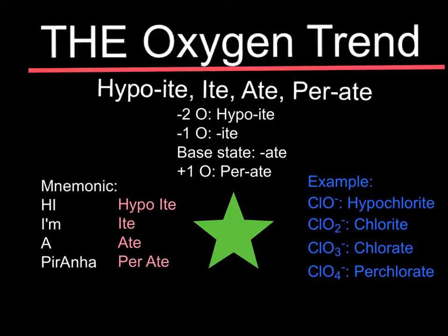Just remember that sulfate SO4 is an -ate with four oxygens, but nitrate NO3 is also an -ate with only three oxygens. So it depends on the element which number of oxygens is the -ate, but the rule 'HI I'm a piranha' works from there. For example, nitrite is NO2 and sulfite is SO3 — each one is an -ite and each has one less oxygen than the -ate.